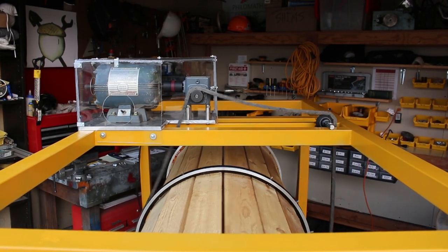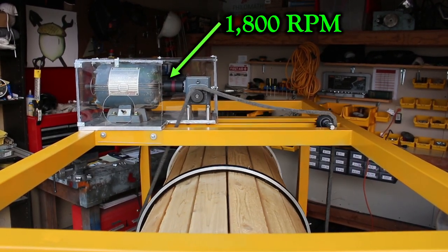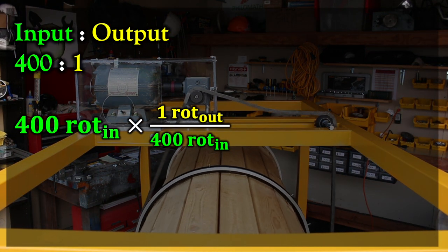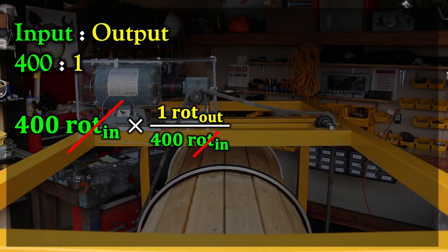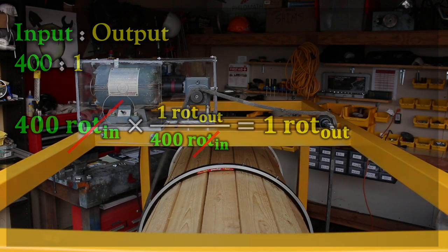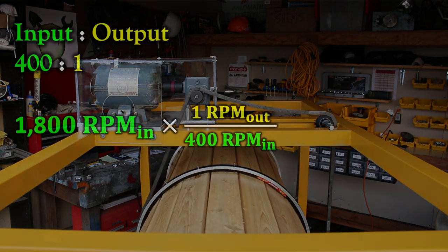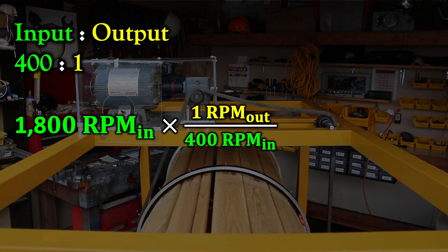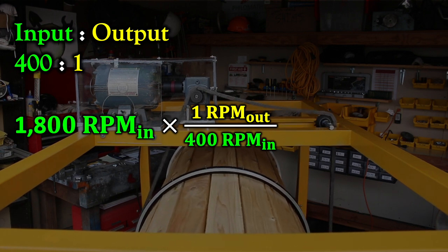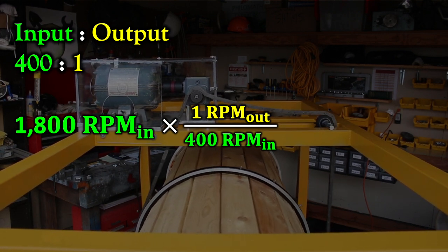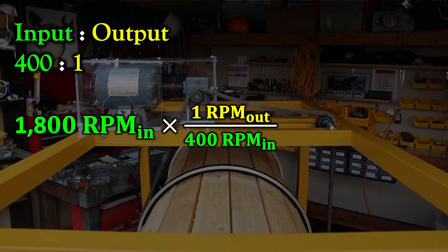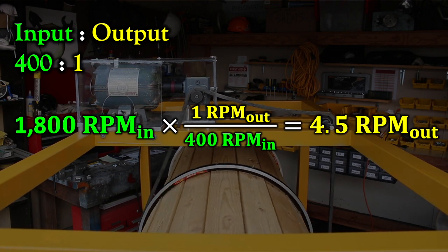That means with this motor that's outputting 1800 RPM, for every 400 rotations from the stub shaft outputting from the motor, our barrel rotates one rotation. So 1800 RPM from the input divided by 400 input rotations per one output rotation means that in one minute our barrel will rotate 4.5 rotations.